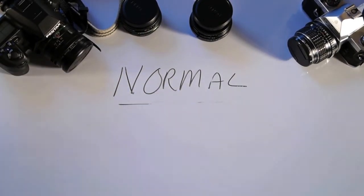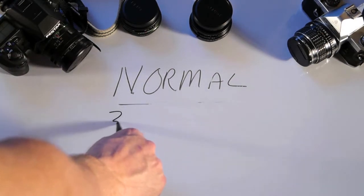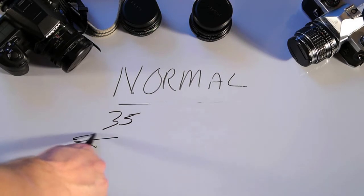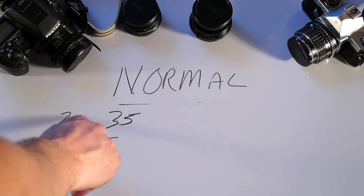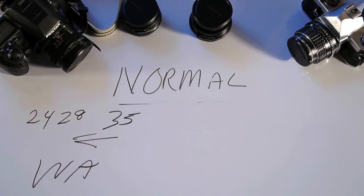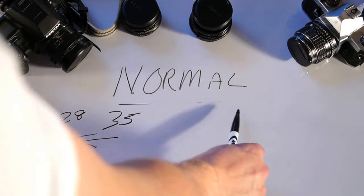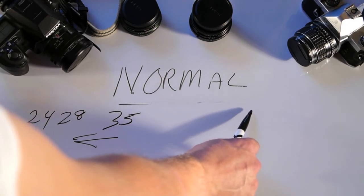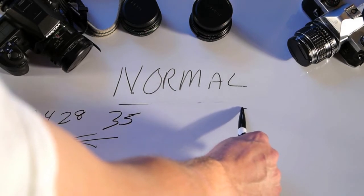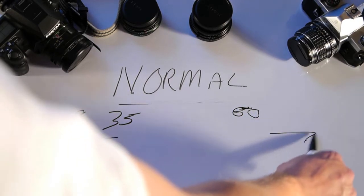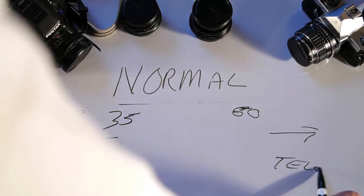Okay? First of all, let's define normal. Well, 35mm, first we're going to talk about full frame. 35mm and wider is considered wide angle. So, what's wider? 28, 24, okay? Those would be considered wide angle. Above 50, above 60, 65, 70, let's go 50, 60. Okay? 60 and higher is considered tele, telephoto.